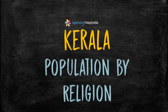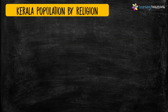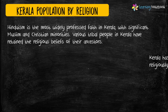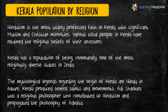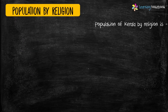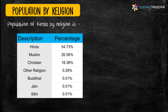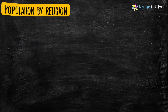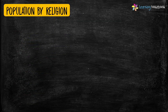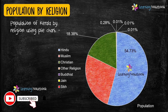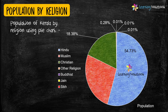The next topic for your Art Integrated project is population of Kerala by religion. A pie chart is another beautiful way to represent the given data, so you may use a pie chart to represent population of Kerala by religion for your Maths Art Integrated project.